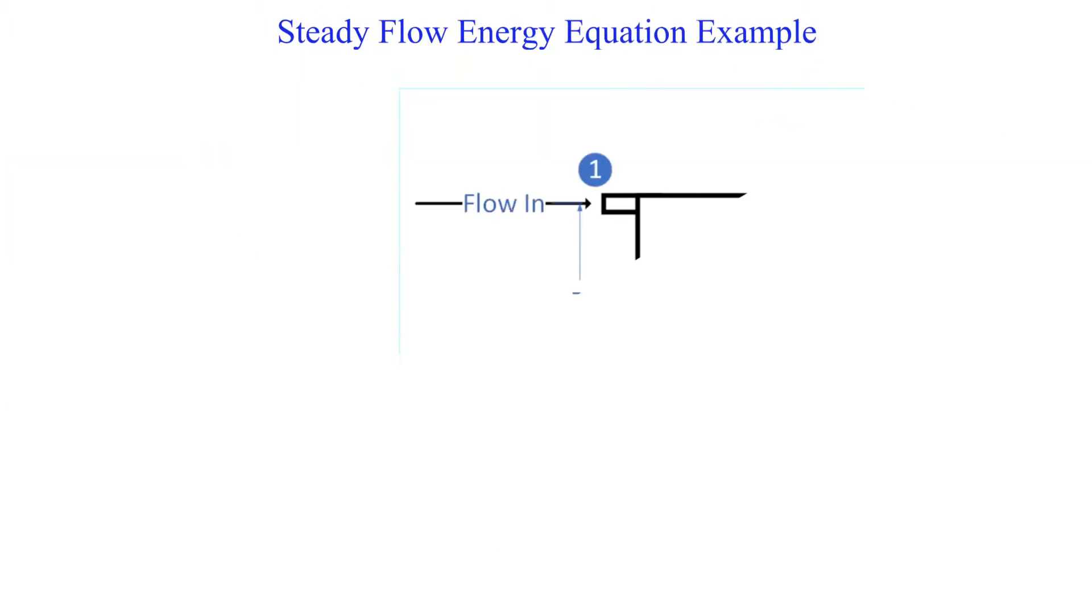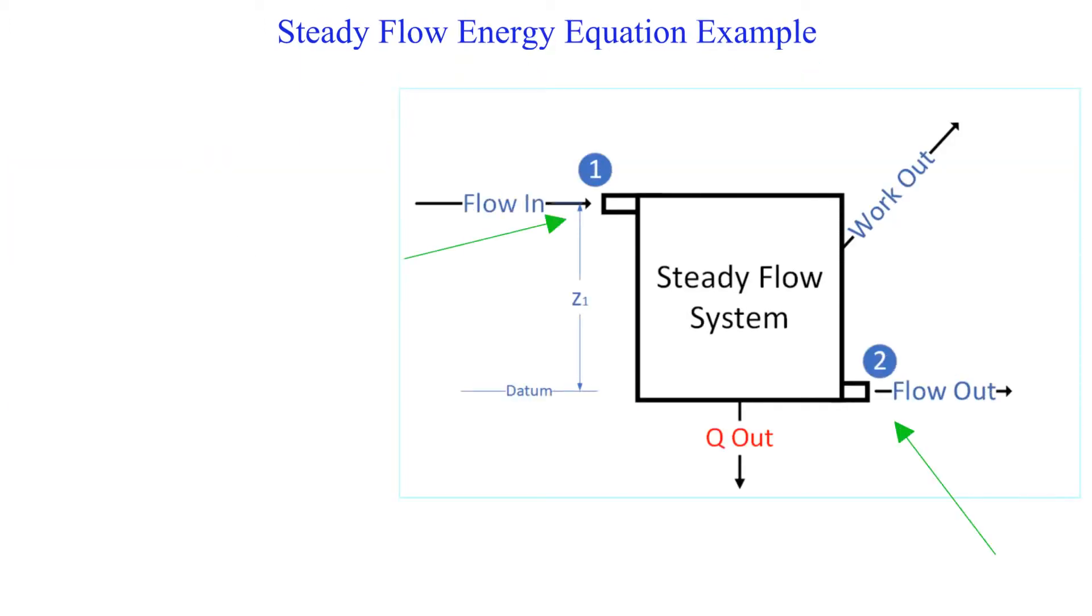Let's work an example. A steady flow system has one inflow and one outflow. It is producing 405 kilowatts of work. The mass flow is three kilograms per second.